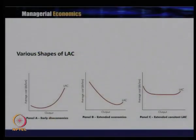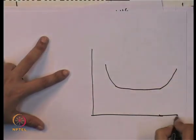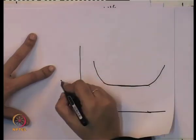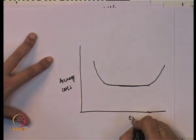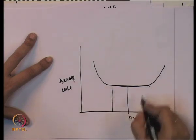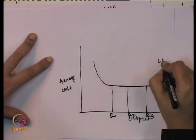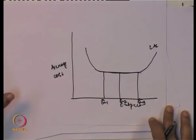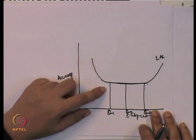The third graph shows the case of extended constant long run average cost. What is interesting here is that the minimum cost is not a single point but extends over a segment. For output levels Q1, Q2, and Q3, this is the long run average cost curve, and economies of scale have been achieved from this point because cost of production is decreasing.